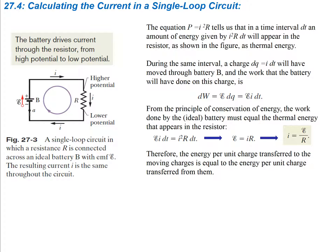Let's look at calculating the current in a single loop. A single loop is just one big series loop connected together. This is going to be our battery. A symbol for battery looks like this — the long end is the positive side, the short end is the negative side. The EMF is going from negative to positive, which is also the direction of our current in this case. The battery drives current through the resistor from high potential to low potential. This is an ideal EMF device, so there's not going to be any internal resistance.